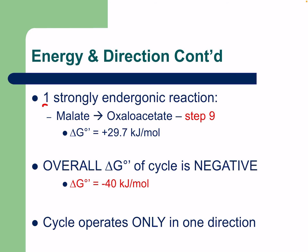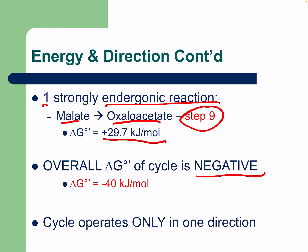The one strongly endergonic reaction is malate to oxaloacetate (step 9) at approximately +29 kJ/mol. The overall Gibbs standard free energy of the cycle is negative at around −40 kJ/mol. The cycle operates only in one direction, always ending at oxaloacetate.